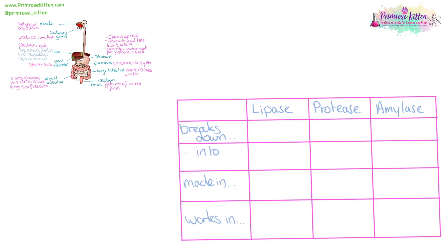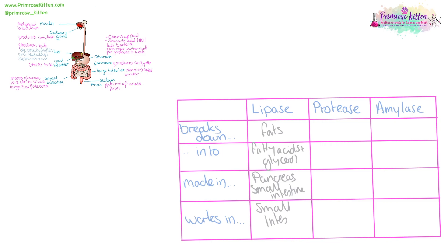There are a number of different enzymes in the digestive system that you need to be aware of. Lipase breaks down fats into fatty acids and glycerol. It is made in the pancreas and small intestine and works in the small intestine. Protease breaks down proteins into amino acids. It is made in the stomach, pancreas, and small intestine.